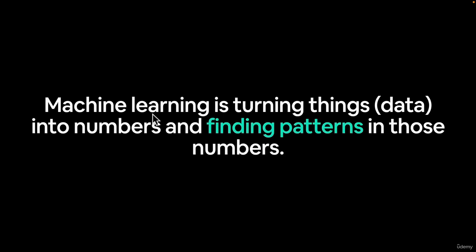So if we define what machine learning is, because as we'll see in a second, deep learning is a subset of machine learning. Machine learning is turning things, data, which can be almost anything, images, text, tables of numbers, video, audio files, almost anything can be classified as data, into numbers, so computers love numbers, and then finding patterns in those numbers.